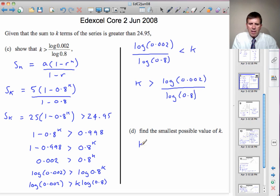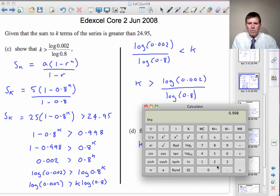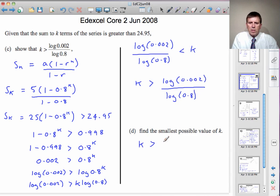And we'll get that k is greater than, and I want the log of 0.002. So it's 0.002, the log of that, divided by the log of 0.8. 0.8, the log of that, equals 27.85. So k is greater than 27.85.